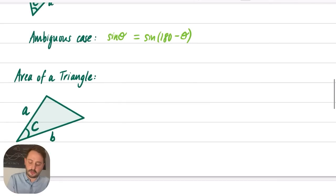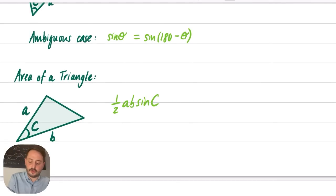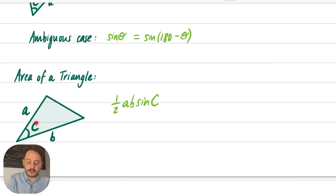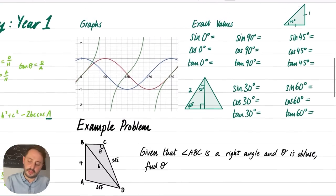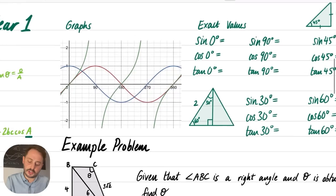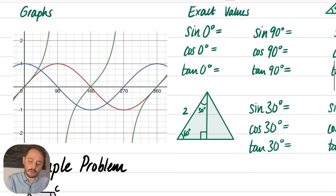The area of a triangle is ½ab sin C, where C is the angle between the two sides a and b. This should be familiar from GCSE. You need to know the size of the angle and the two sides either side of it. The shapes of the sine, cosine, and tangent graphs should also be known off by heart — these should be quite familiar from GCSE as well.